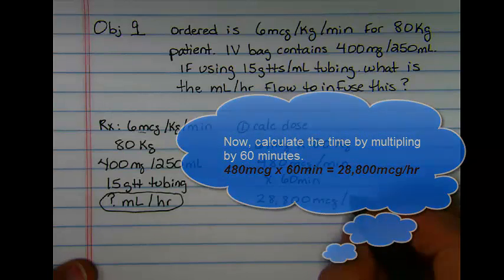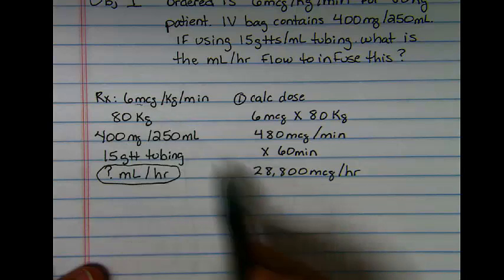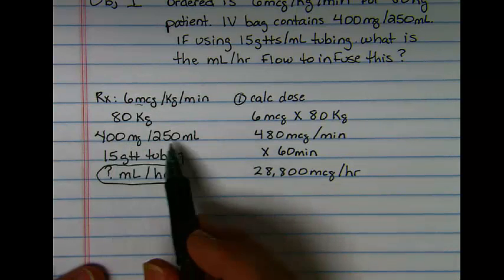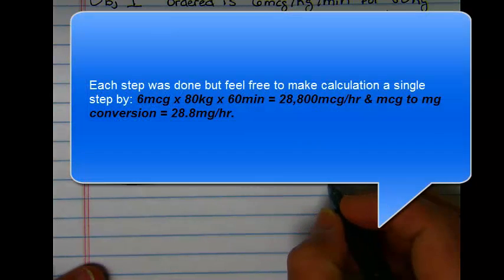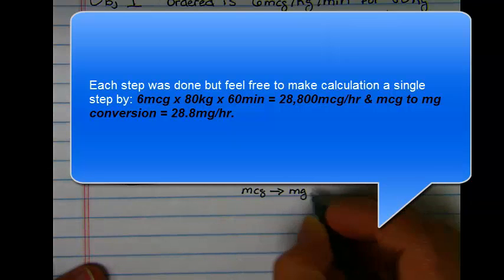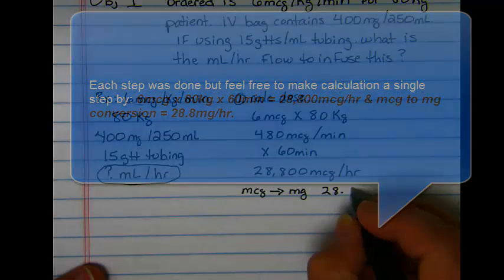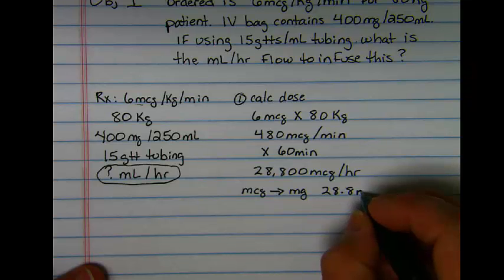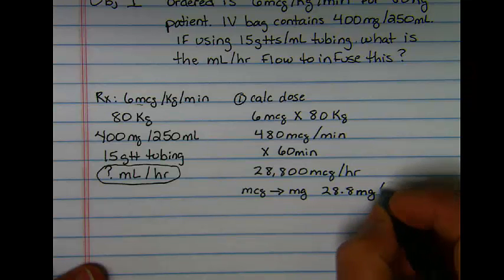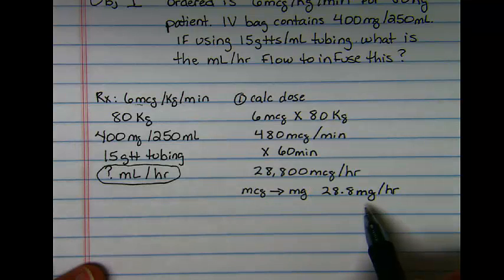The final step in making my order look like the IV bag it needs to come out of is to convert micrograms to milligrams by moving my decimal one to three places. So this results in 28.8 milligrams per hour as what I need for my IV bag.